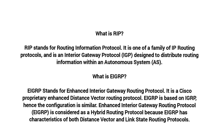EIGRP stands for Enhanced Interior Gateway Routing Protocol. It is a Cisco proprietary enhanced distance vector routing protocol. EIGRP is based on IGRP, hence the configuration is similar. EIGRP is considered a hybrid routing protocol because it has characteristics of both distance vector and link state routing protocols.